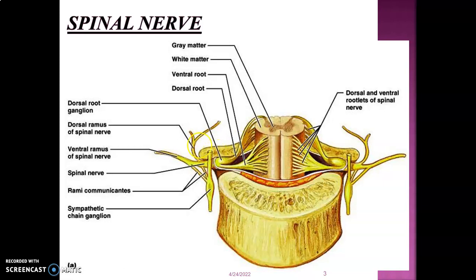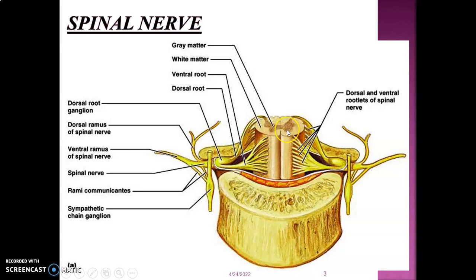The anterior horn contains the cell bodies of motor neurons, and the posterior horn contains the cell bodies of interneurons. Sensory nerve roots bring information into the posterior horn, and their cell bodies are within the dorsal root ganglia. From the anterior horn, the motor nerve roots exit, with cell bodies in the anterior horn. The sensory and motor roots together form a spinal nerve.